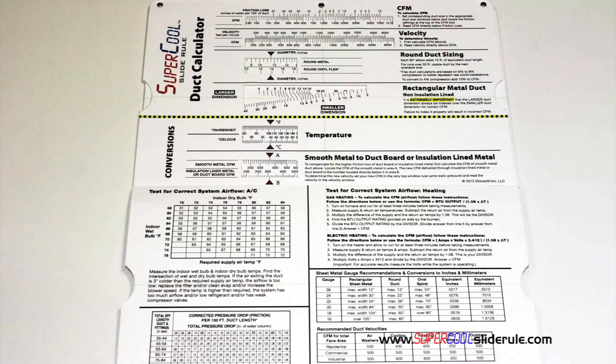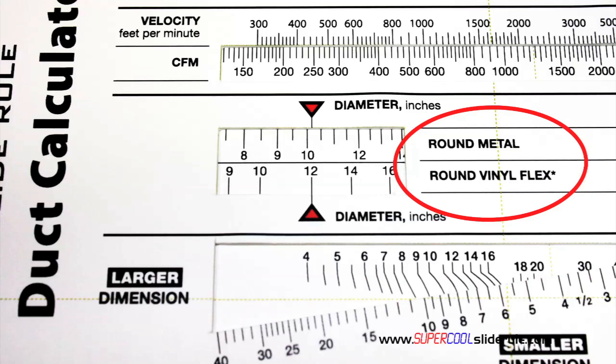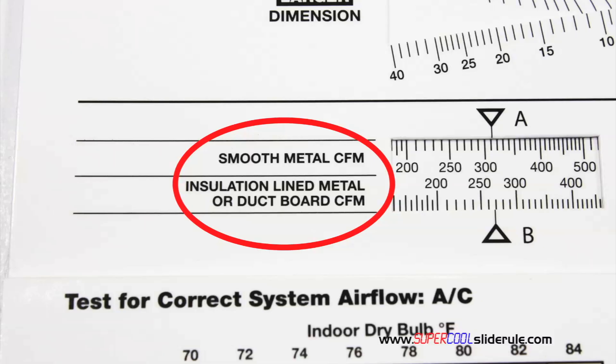Inside is packed with even more information. It performs sizing of both metal and flexible duct. It has the only direct reading conversion from smooth metal to insulation lined metal we've ever seen. The majority of technicians have never been taught that if the insulation is on the inside of the ductwork, you cannot size it with a regular duct calculator.